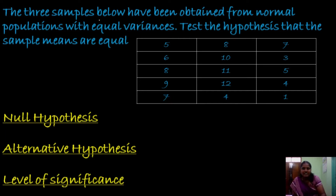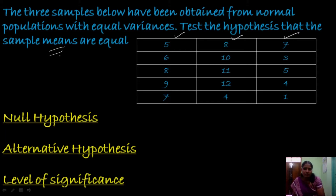The three samples below have been obtained from normal populations with equal variances. Test the hypothesis that the sample means are equal. Here we have three sets of sample values. Here we have to go for one-way classification. First, we have to set up the null hypothesis and alternative hypothesis.